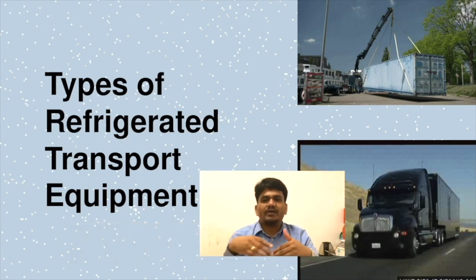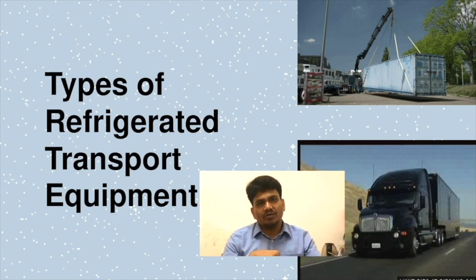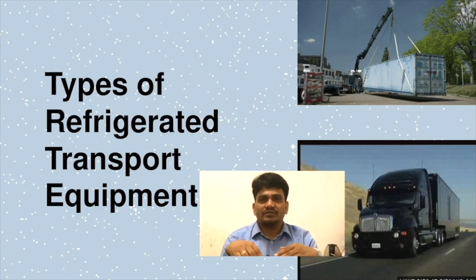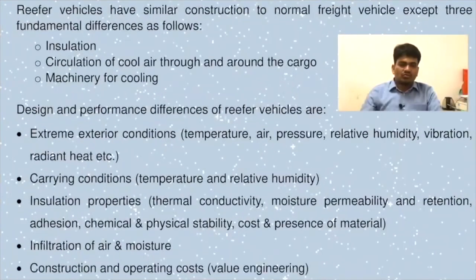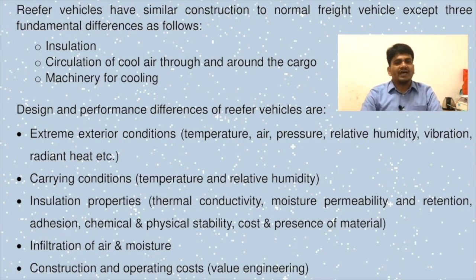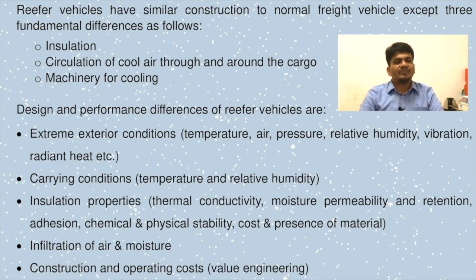The types may be container type and trailer type. Trailer type is generally loaded on the rail and transported by the rail transport system, while the trailer on the road. Reefer vehicles have a container attached, and they have similar construction to normal freight vehicles except three fundamental differences: insulation, circulation of cool air through and around the cargo, and machinery for cooling.